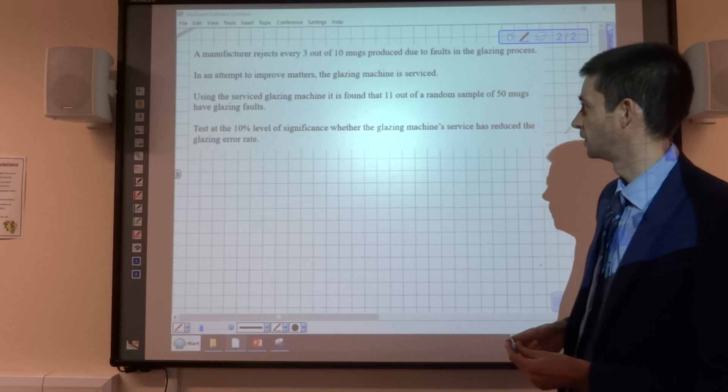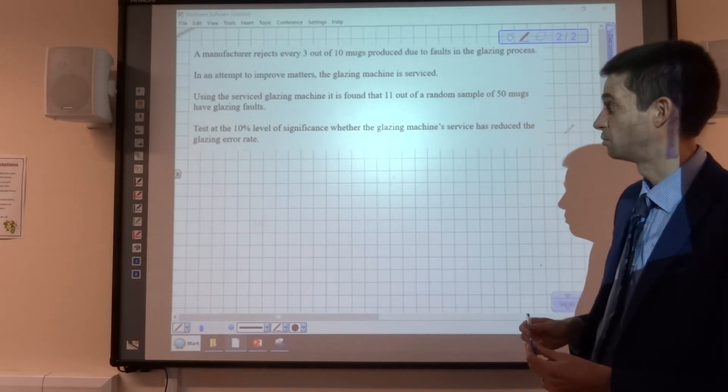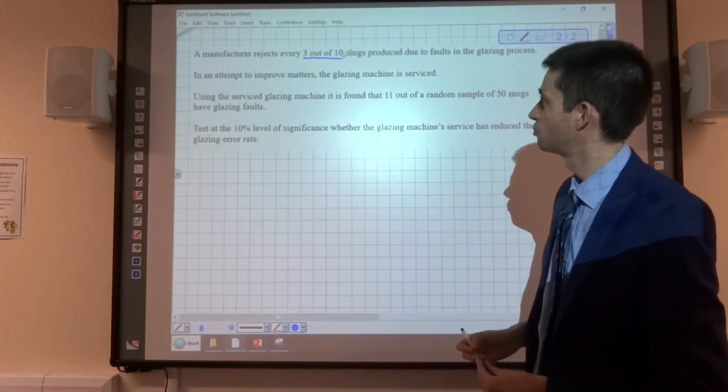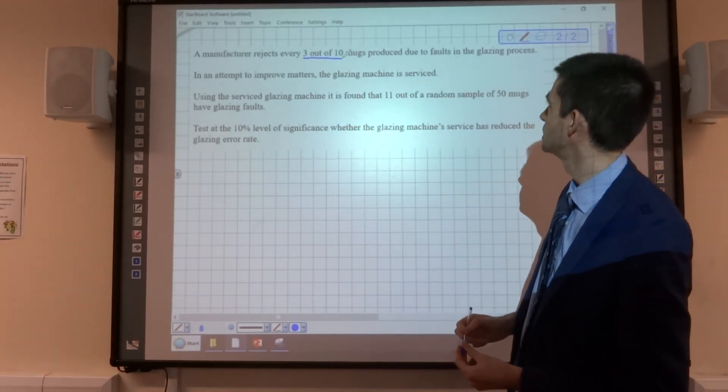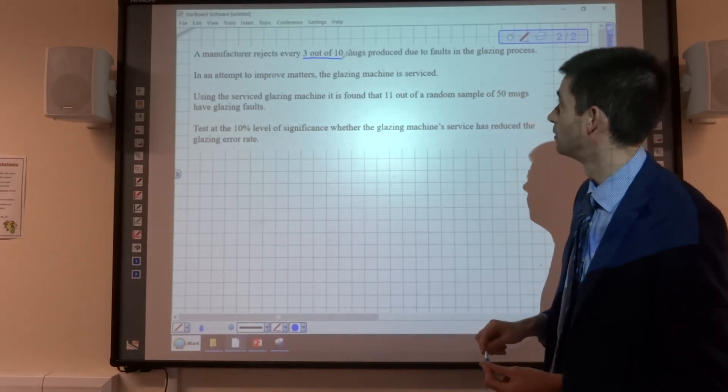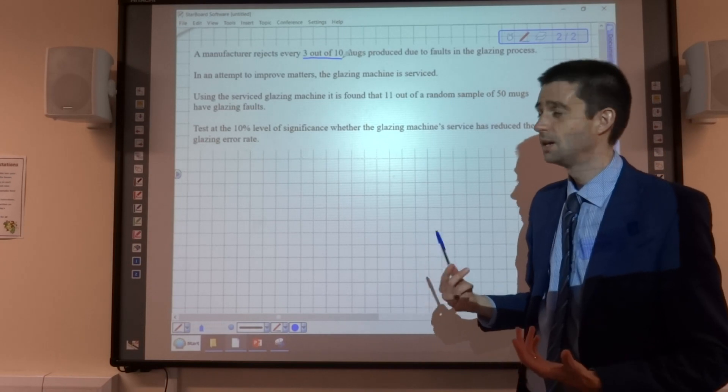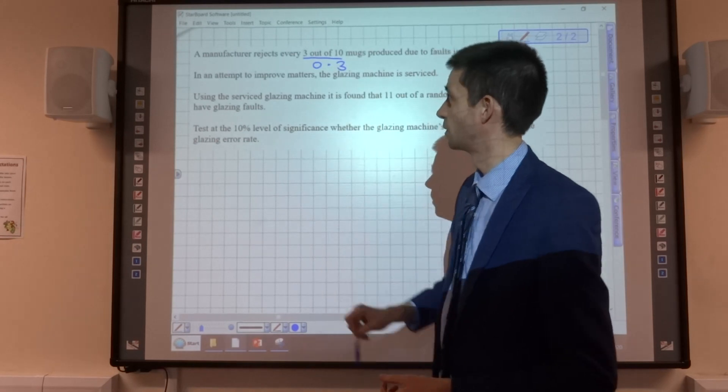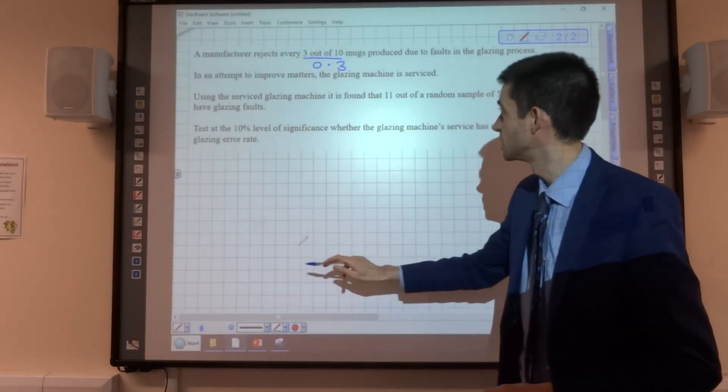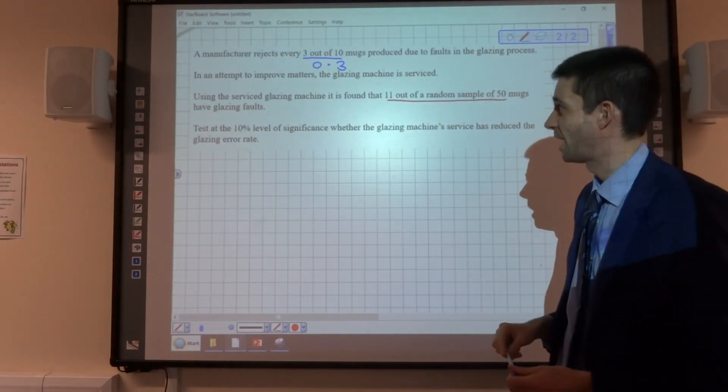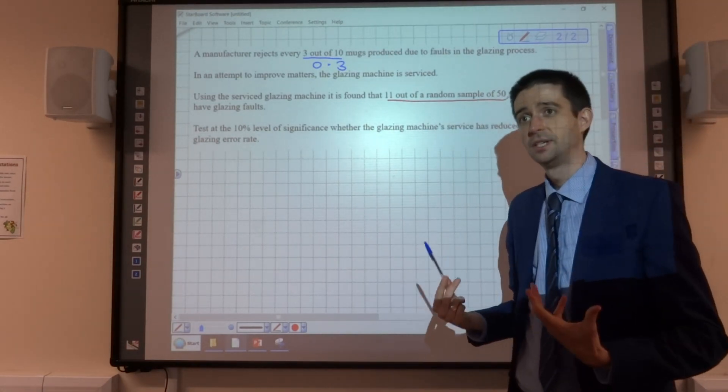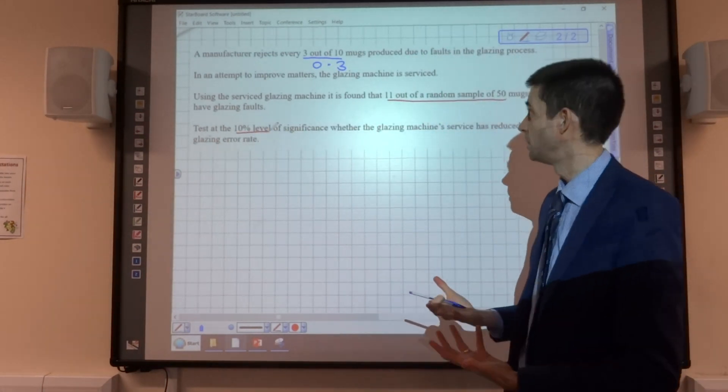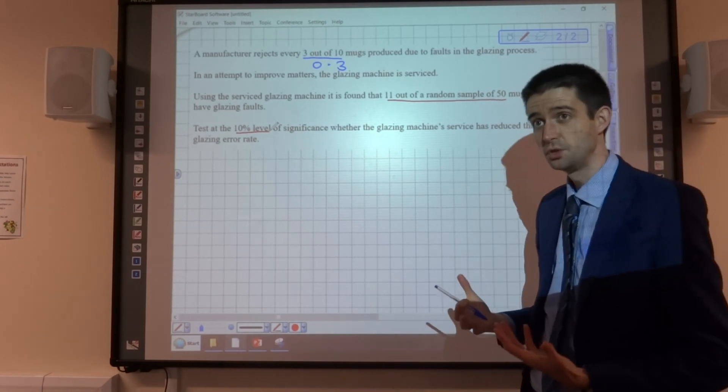Test at the 10% level of significance whether the glazing machine's service has reduced the glazing error rate. Right, so key information: 3 out of 10 mugs produced due to faults in the glazing process are rejected. So our probability of rejection due to faults is 0.3. We then do a sample, and 11 out of 50 of those have glazing faults.